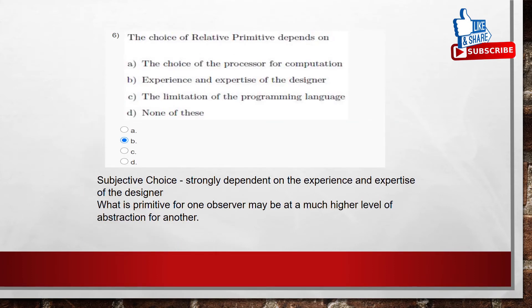Coming to the sixth question. The choice of relative primitive depends on. Here, we know that the subjective choice of relative primitive strongly depends on the experience and expertise of the designer. Coming to the option, we have four options. The choice of the processor for computation, Experience and expertise of the designer, The limitation of the programming language, None of these.